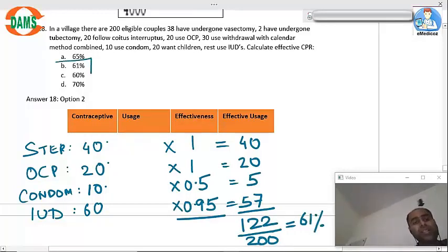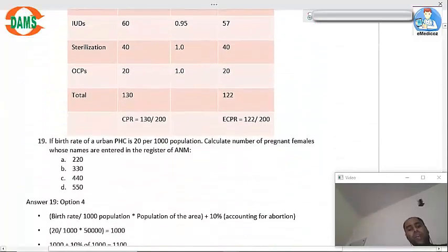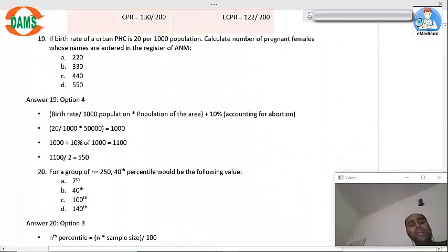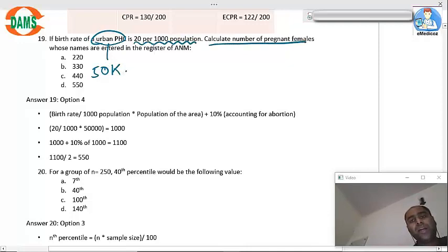So answer to this question was option number two. Question 19: If birth rate of urban PHC... the urban PHC, we have 50,000 population, is 20 per thousand, calculate the number of pregnant females whose names are entered in the register. Okay, so 20 per thousand.